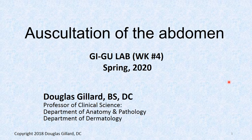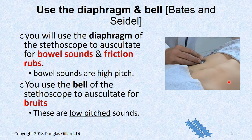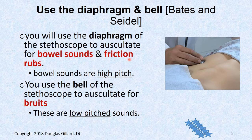We are going to auscultate the abdomen. You'll be using the diaphragm of the stethoscope to auscultate for bowel sounds and friction rubs. Then you're going to switch over to the bell to look for bruits. Also, Venus hums could be added in there.